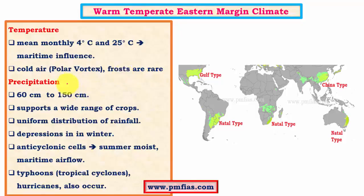Coming to precipitation, the average annual precipitation is about 60 to 150 centimeters. It is quite low compared to the tropical humid type of climatic regions where the precipitation is about 200 to 250 centimeters. This particular region supports a wide range of crops because of favorable conditions like the uniform distribution of rainfall throughout the year, and the quantum of rainfall is more or less sufficient for most crops.